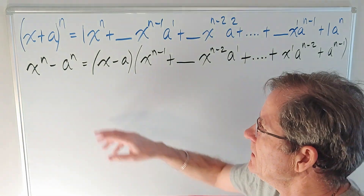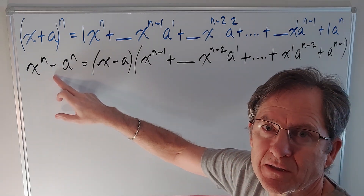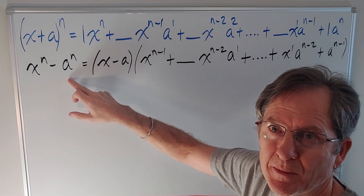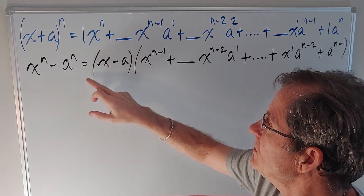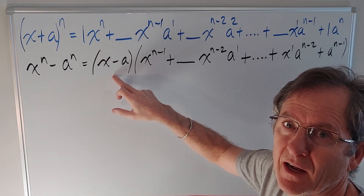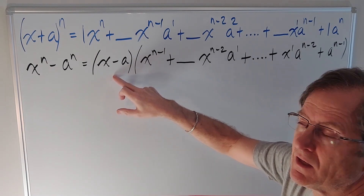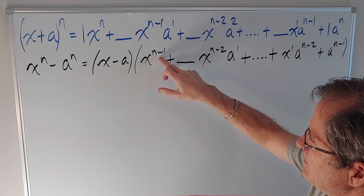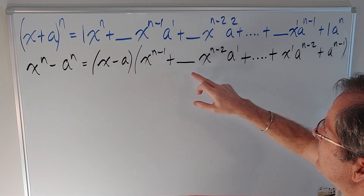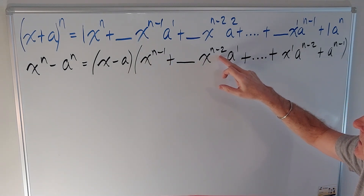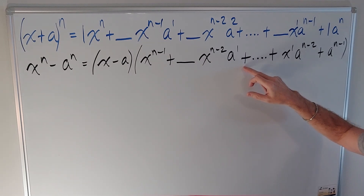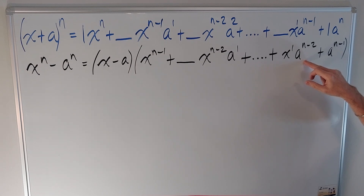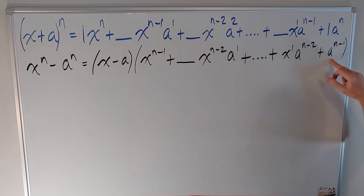Now I want to look at factoring the difference of powers: x to the n minus a to the n. In particular, it always gives you the simple factor x minus a, times x to the n minus 1, plus a certain number of terms with 2 less x's with 1 a, and so on, all the way down to 1x and a to the n minus 2, followed by a to the n minus 1.